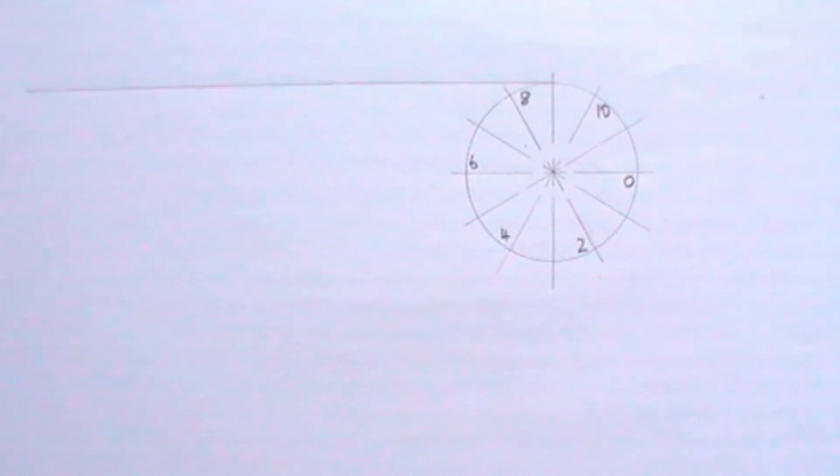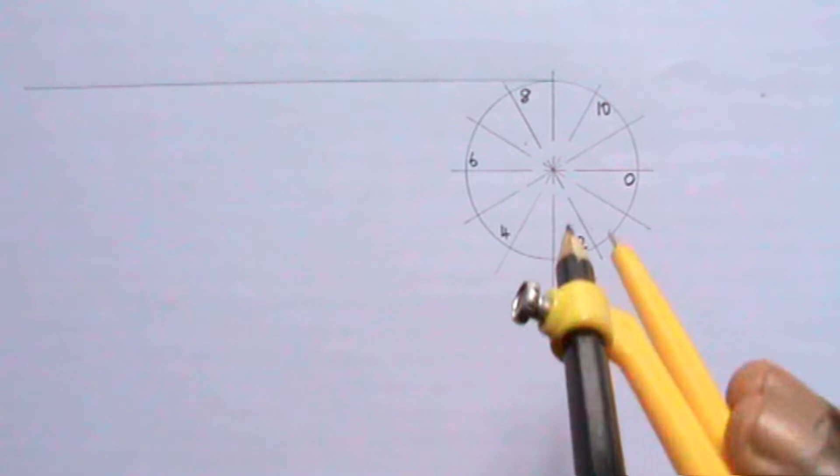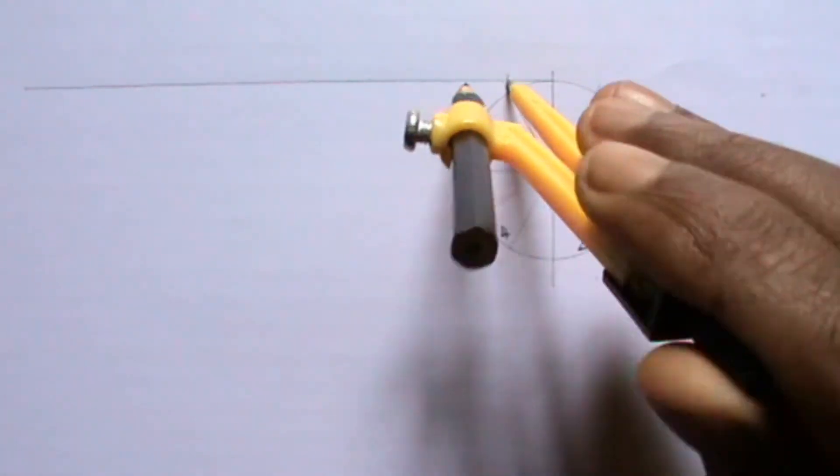I will divide the line into 12 equal parts. This is because I divided the circle into 12 parts.